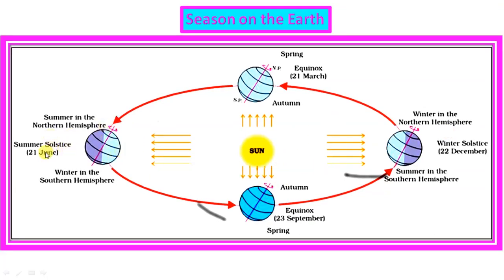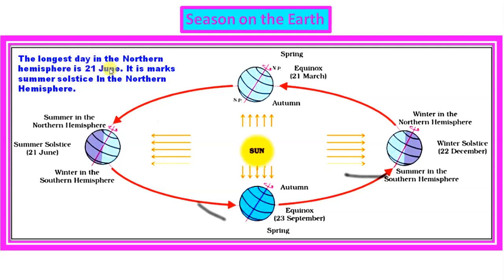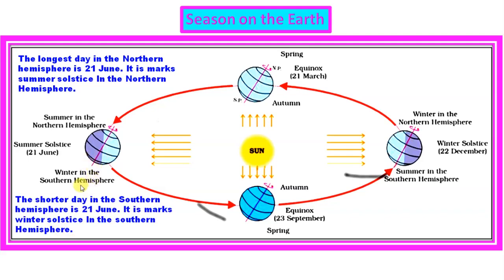On 21st June, the longest day in the northern hemisphere occurs — this is marked as the summer solstice in the northern hemisphere. Summer solstice means the longest day. At the same time, the southern hemisphere is far from the sun, so it is the shortest day there — marked as the winter solstice in the southern hemisphere.